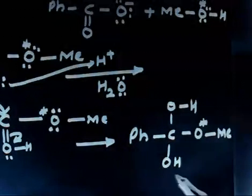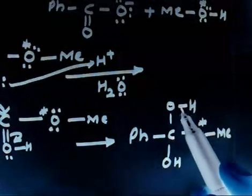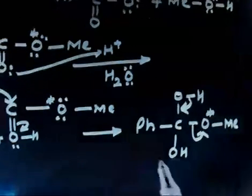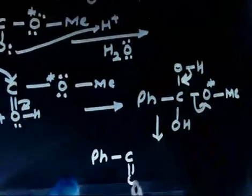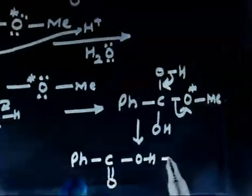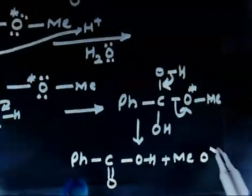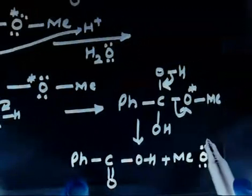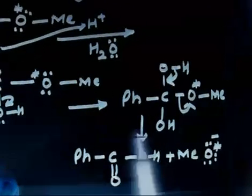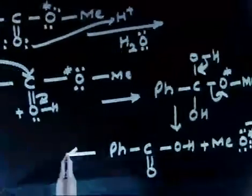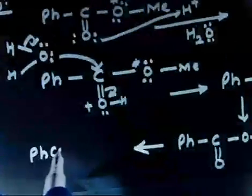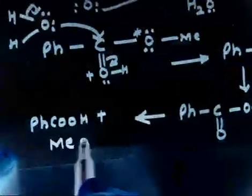Now, two OH groups on the same carbon is not stable. So this electron pair goes here and I expel the leaving group OMe. I will get PhCOOH plus MeO⁻, and this O⁻ is the labeled — radioactive — oxygen. Since the medium is acidic, this O⁻ takes H⁺ and forms MeO*H. So the product is PhCOOH plus MeO*H — the labeled oxygen goes to the alcohol.